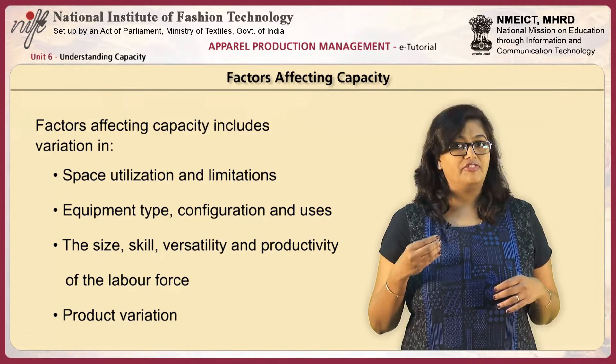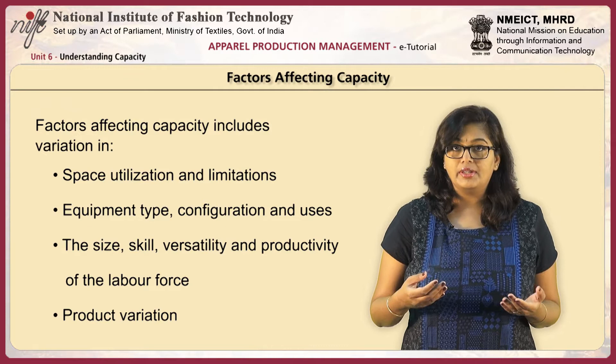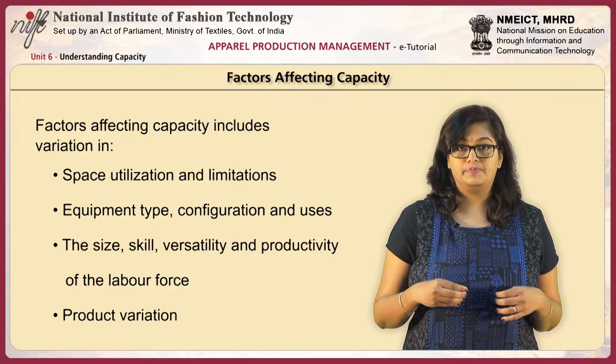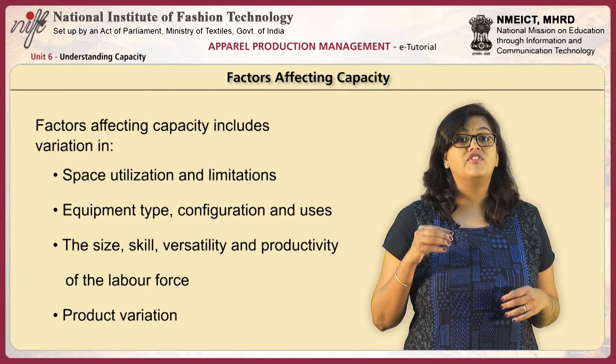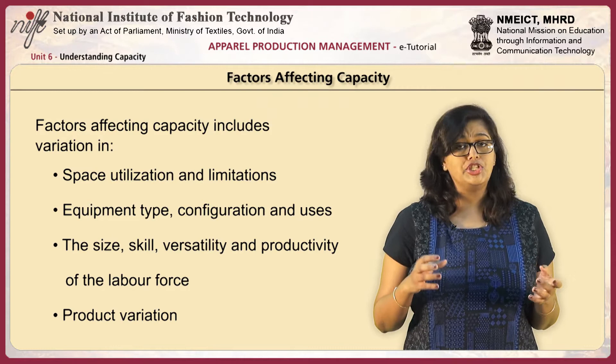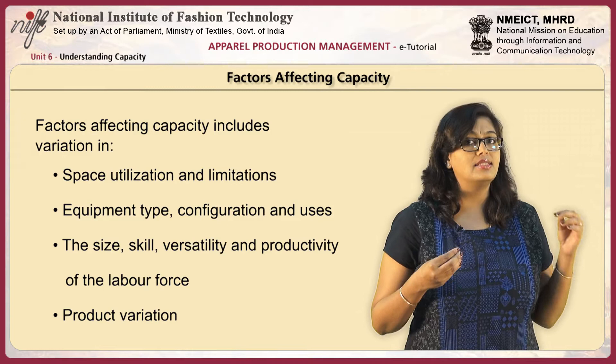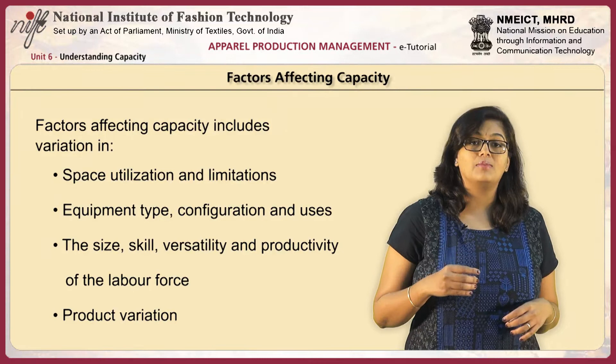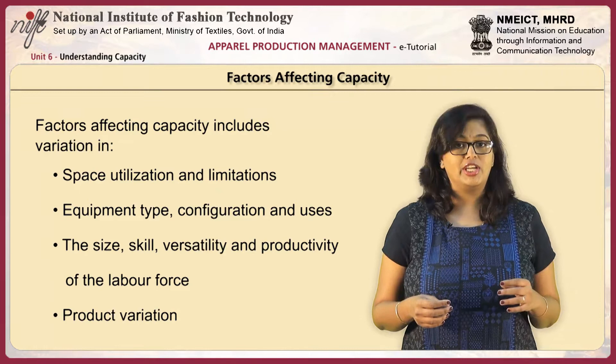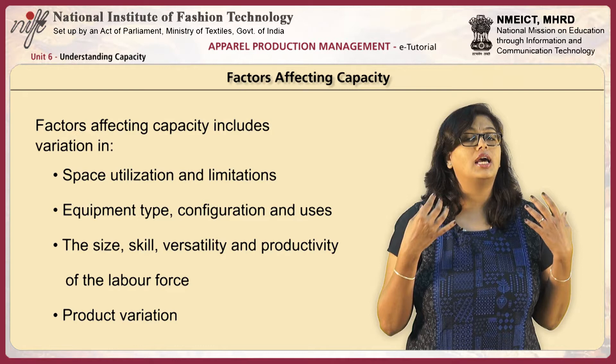Next comes equipment type, configuration and uses. This depends on the investment the company is ready to input and the requirement of the company. Next comes the skill, size, versatility and productivity of the labor force — we should be able to identify and understand the skill set of the labor force. And finally comes the most important factor, which is product variation. Any change in the product will completely determine the make or break of what our capacity is required.